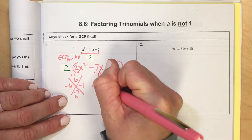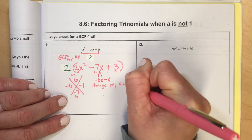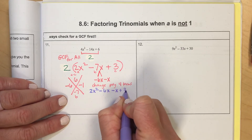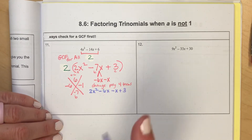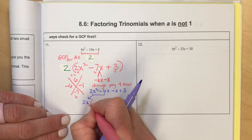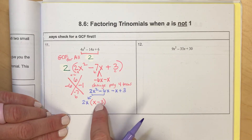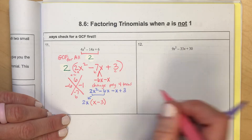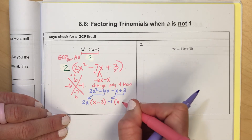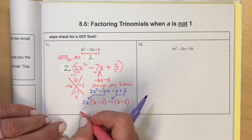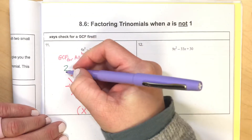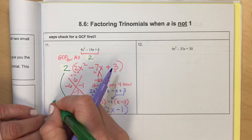Change the polynomial to four terms: 2X squared minus 6X minus 1X plus 3. The order of those middle terms won't matter. Factor by grouping: from the first two terms, 2X comes out, leaving X minus 3. From the last two terms, since the signs are opposite of what I need, I pull out a negative 1, giving X minus 3. These match, so that's one factor. The GCFs make the other. And don't forget the GCF of 2 that was pulled out originally.